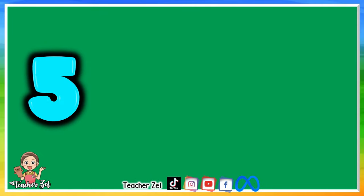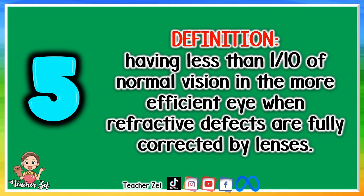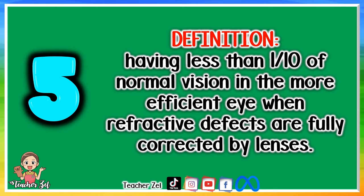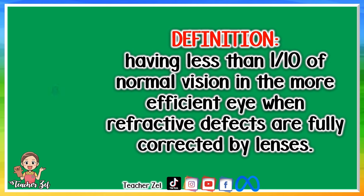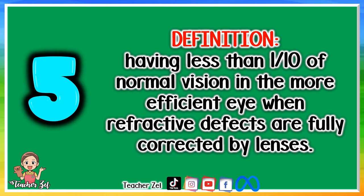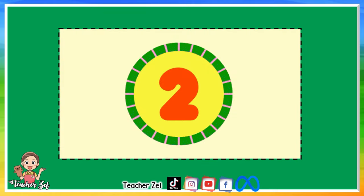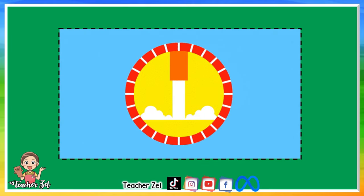Number 5. Spell the word blind. Definition: having less than 1 over 10 of normal vision in the more efficient eye when refractive defects are fully corrected by lenses. Number 5, spell blind. Number 5, spell blind.